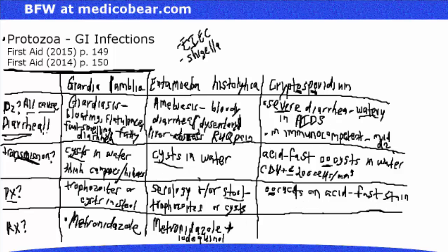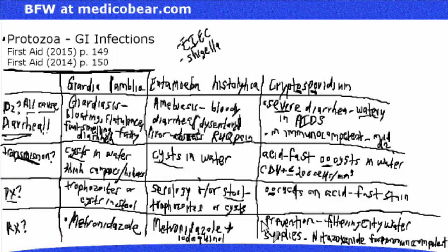Diagnosis of Cryptosporidium is made by oocysts on acid-fast stain. We prevent it by filtering city water supplies, and nitazoxanide is used for the immunocompetent — those without immunosuppression or HIV/AIDS.